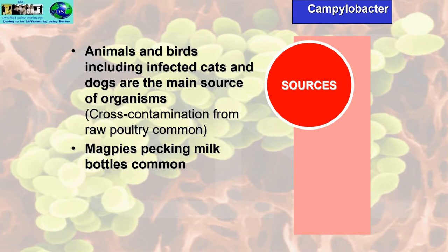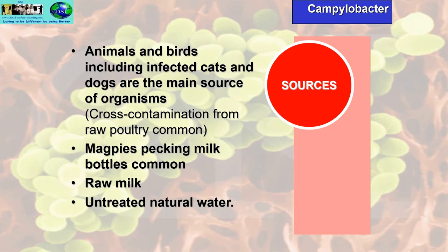Magpies pecking milk bottle tops used to be quite common. If you see a pecked milk bottle top, don't use it because it's likely to be infected with Campylobacter. Raw milk and untreated natural water — any water from streams, rivers or brooks — should not be drunk as is. Even if it looks clean, it is likely to be infected with Campylobacter and other microorganisms and parasites.